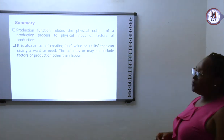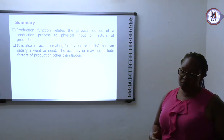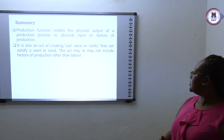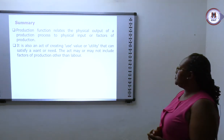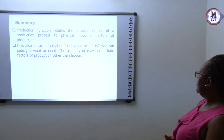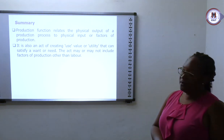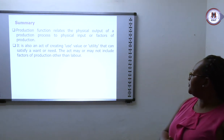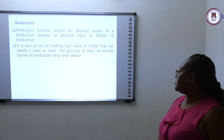In summary, the production function relates the physical output of a production process to physical inputs — it is the relationship between input and output. It also creates value or utility that satisfies human wants and needs.